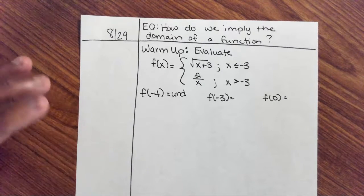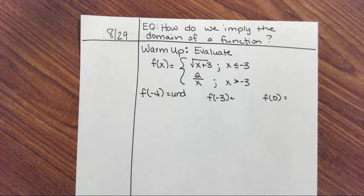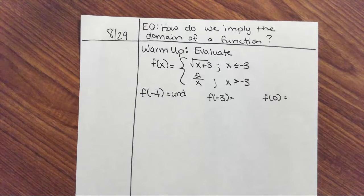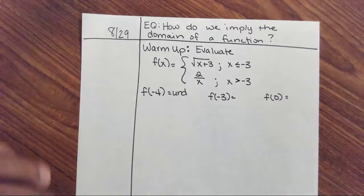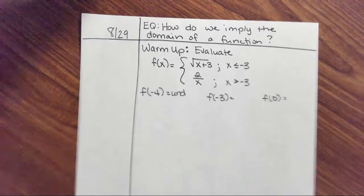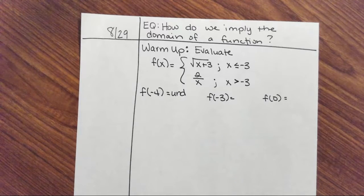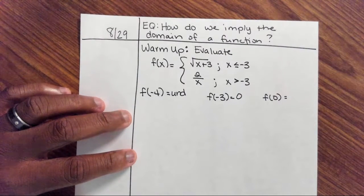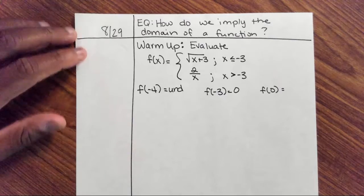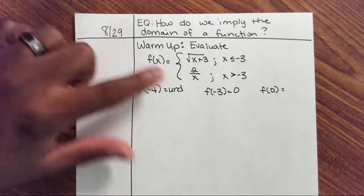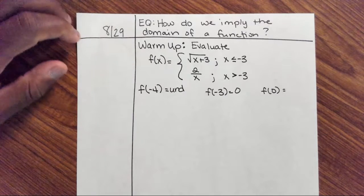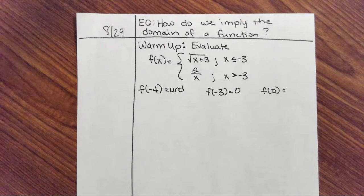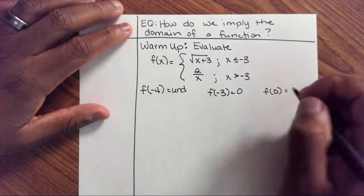You should have had a problem doing that. For f(-3), you plug into the first function. Negative 3 plus 3 is 0, and the square root of 0 is 0. For f(0), that falls in the second function, giving 2 divided by 0. Division by zero is impossible, so this is also undefined.